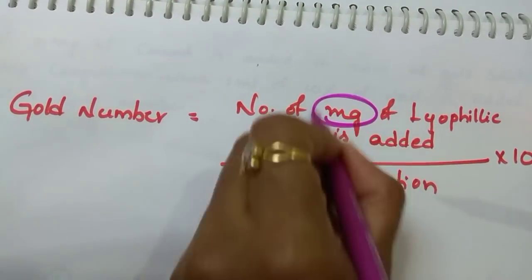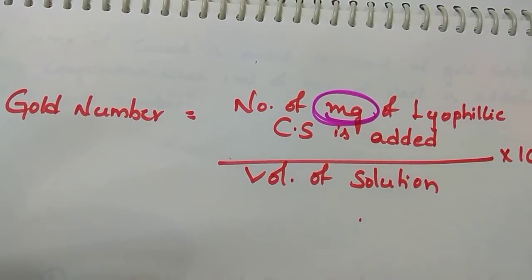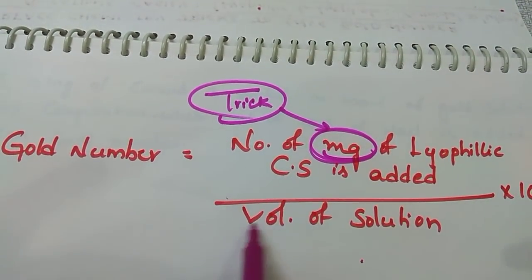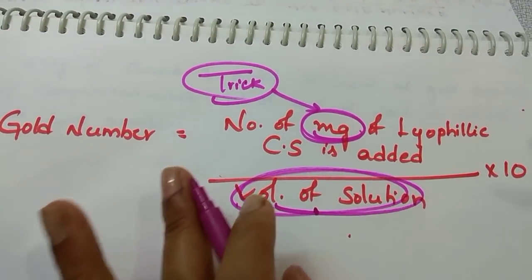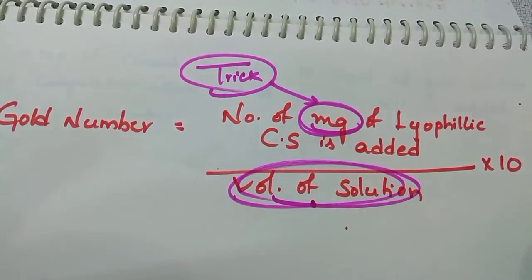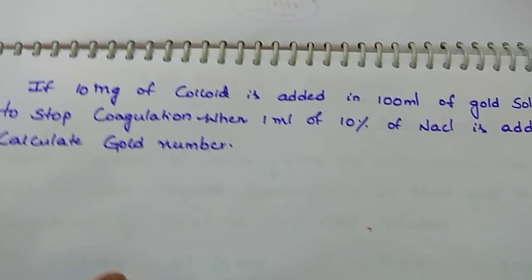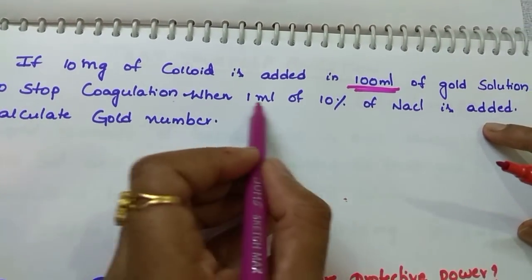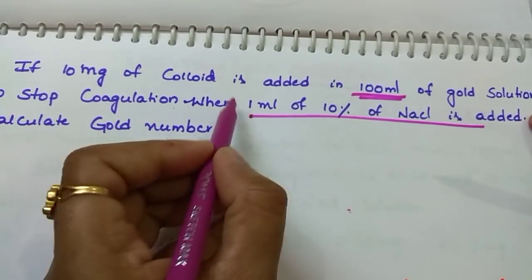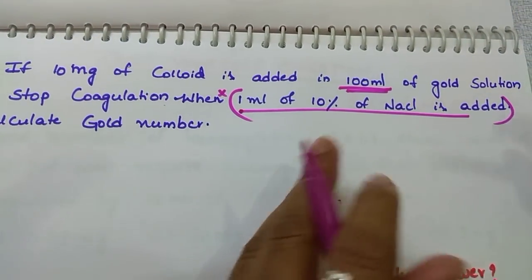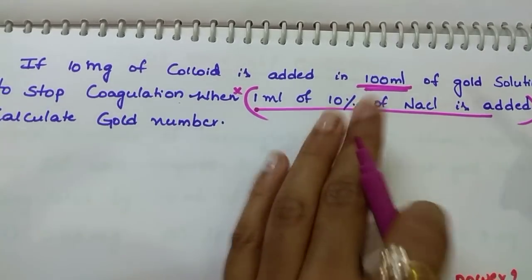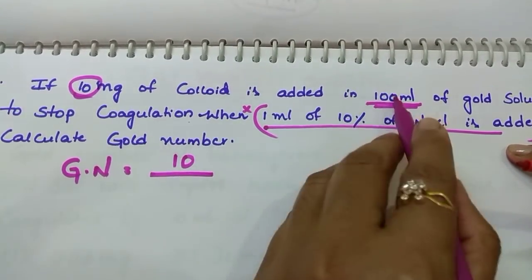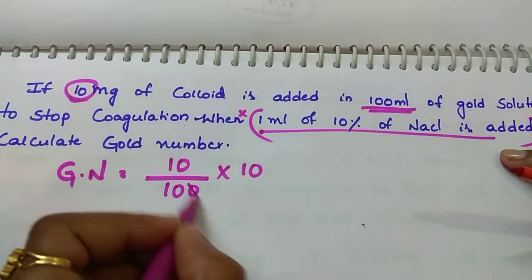Important point to keep in mind: look at how many milligrams of lyophilic colloidal solution are given in the question - that is the main trick. If the amount is not in milligrams, you have to convert it. Also note the volume of the gold solution. That's it - other data you should not consider. Based on these two values only you can solve it. For example: if 10 milligrams of colloid is added to 100 ml of gold solution to stop coagulation when 1 ml of NaCl is added - the NaCl data is not required. Gold number = 10 divided by 100, into 10 = 1.